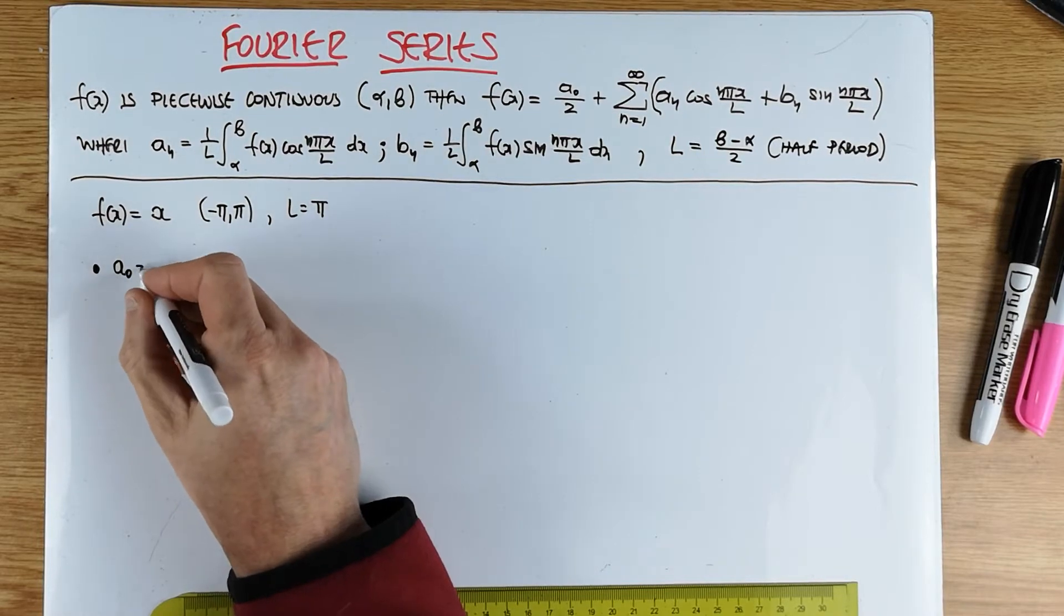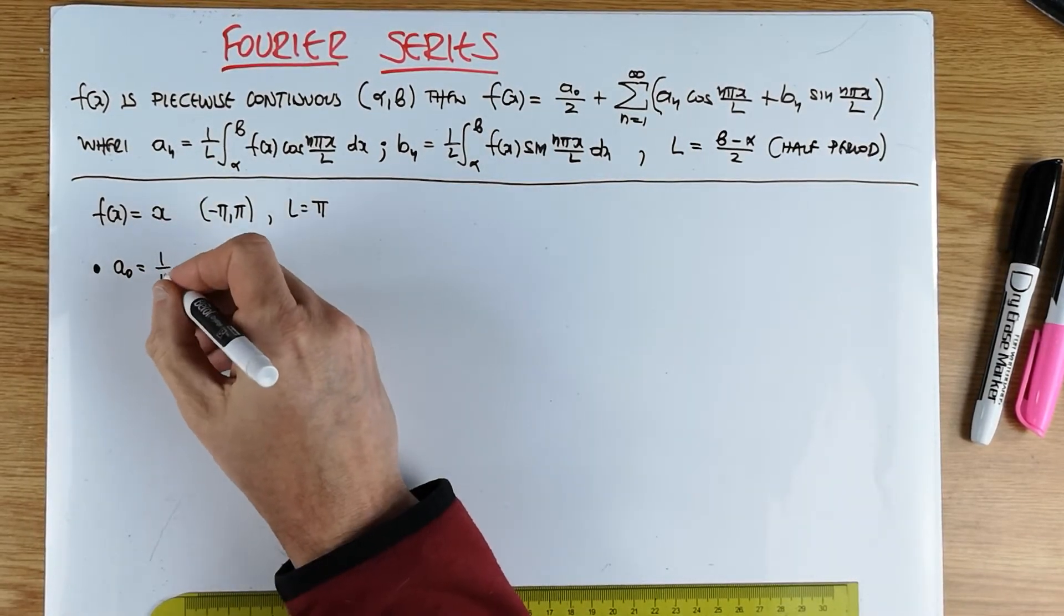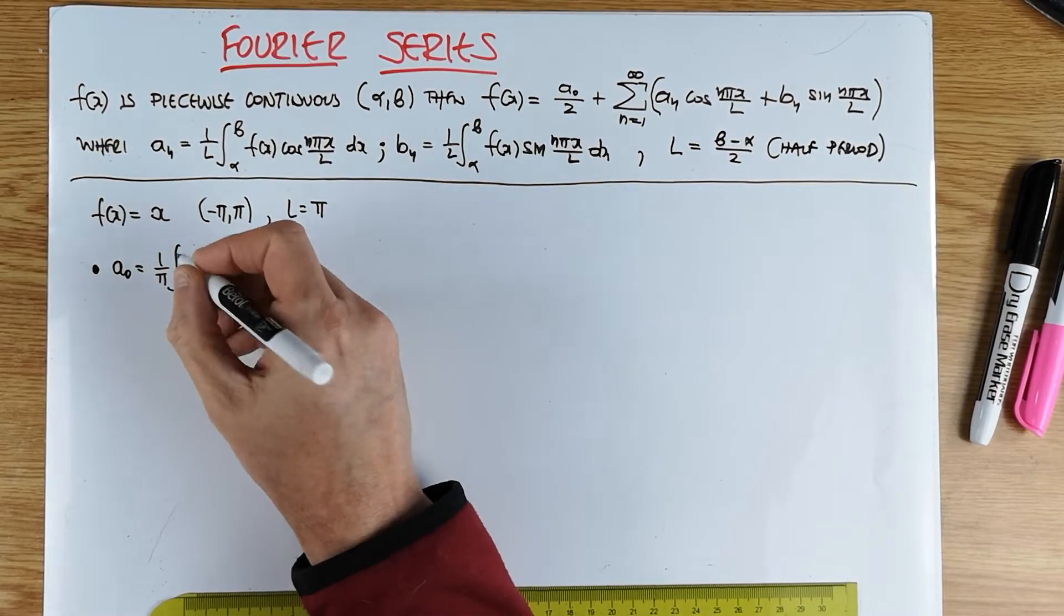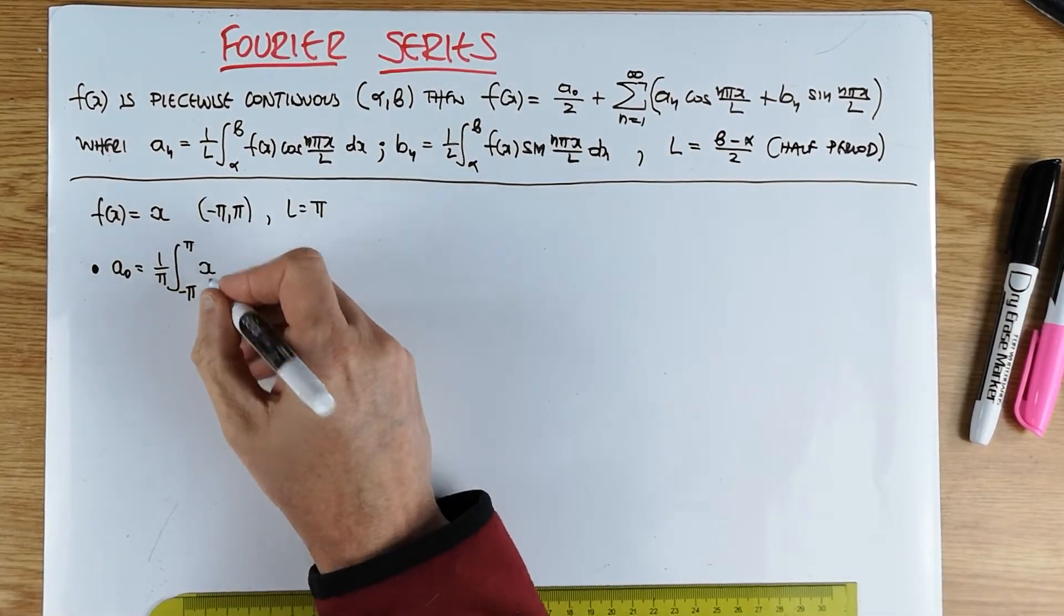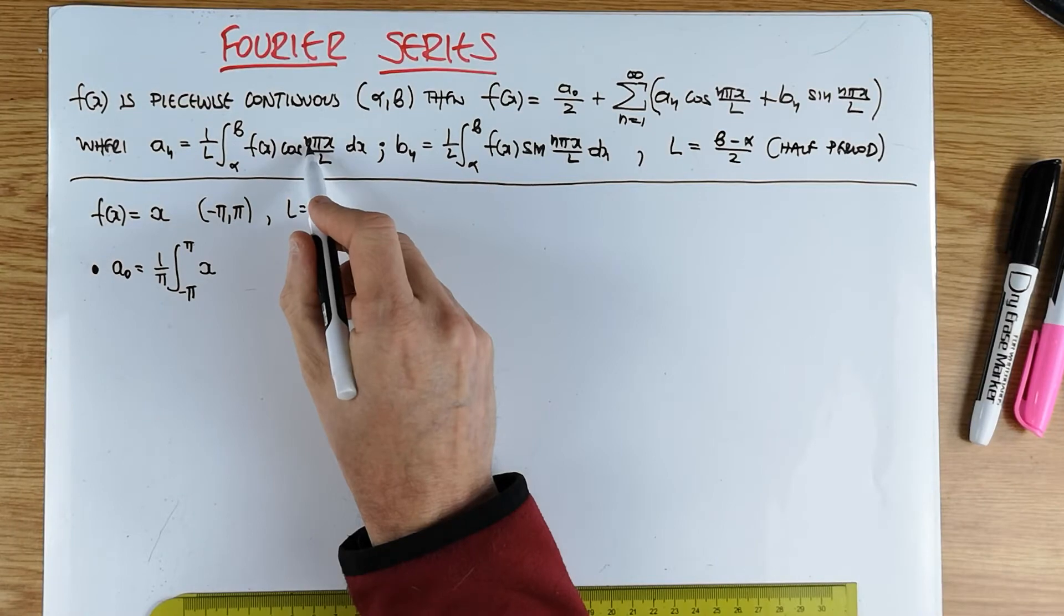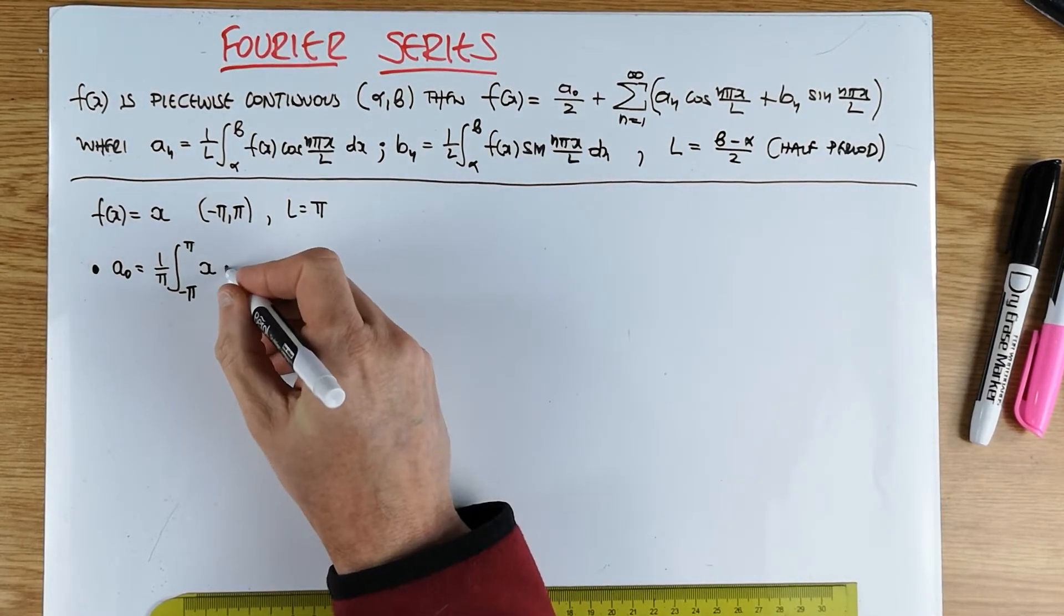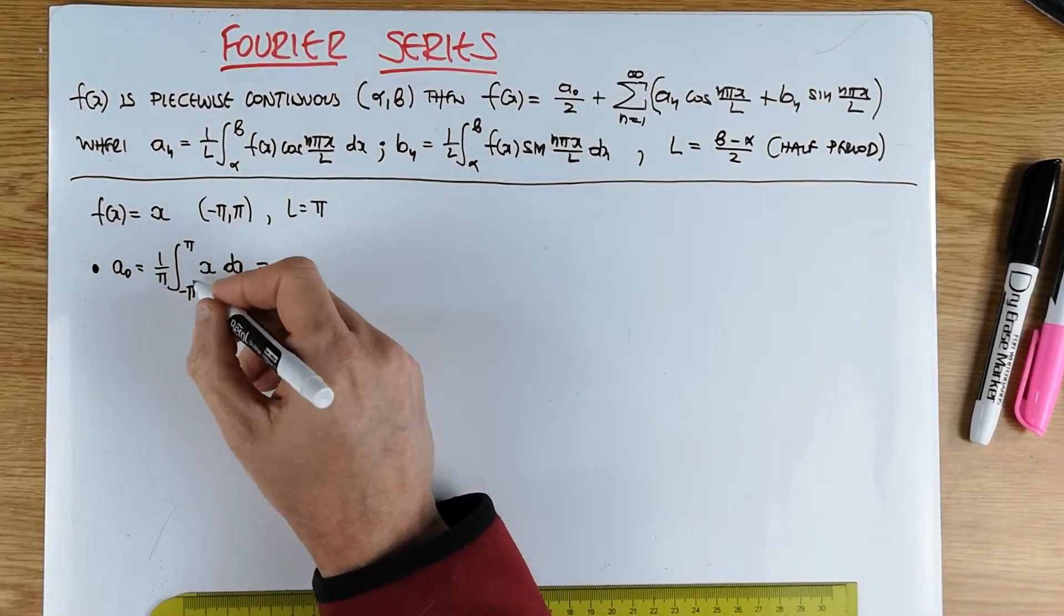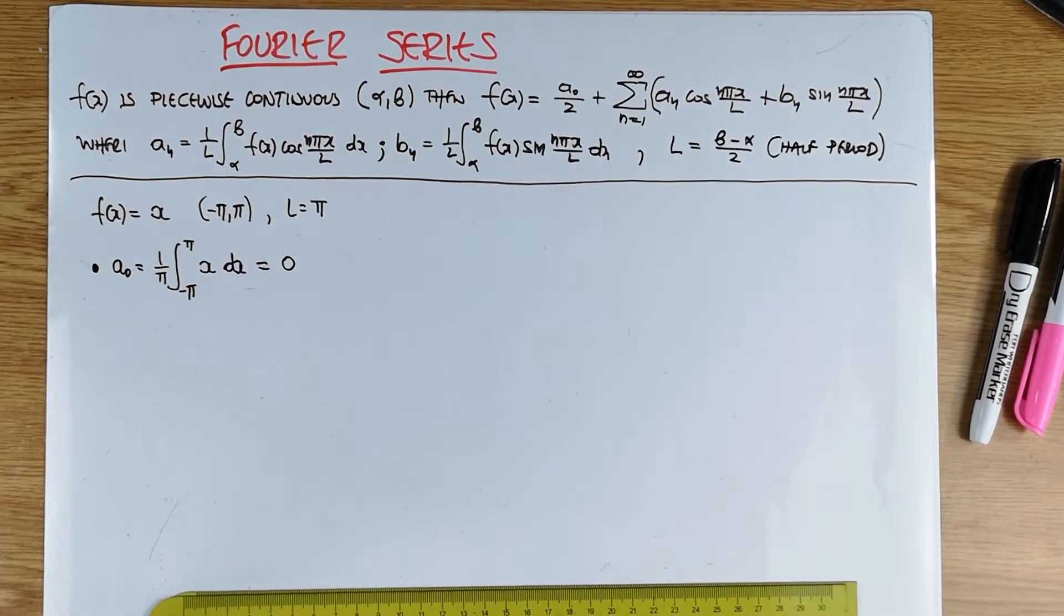So what is a_0? a_0 according to the formula is going to be 1 over pi, the integral from minus pi to pi, and our f of x is of course x. And of course n equals 0 here. That's the definition of a_0. And therefore, cos 0 is simply 1 dx. And of course, the a_0 will be 0, because this is an odd function in a symmetrical domain, and therefore it will integrate to 0.